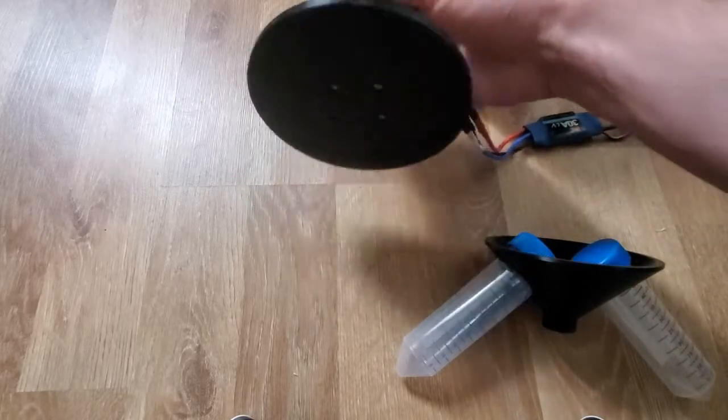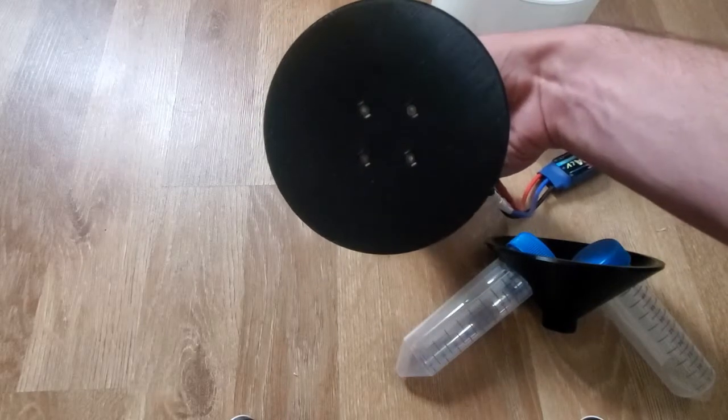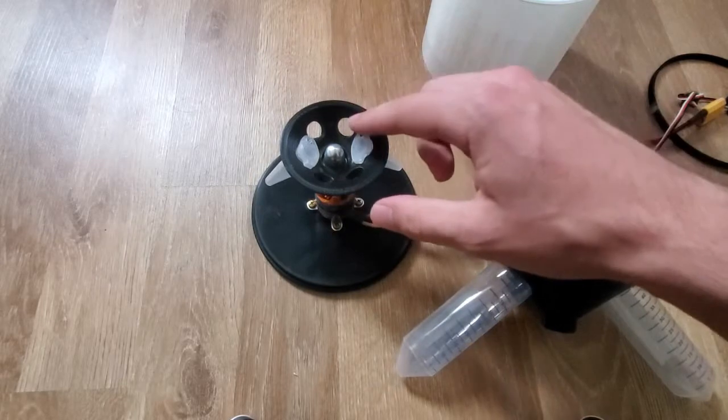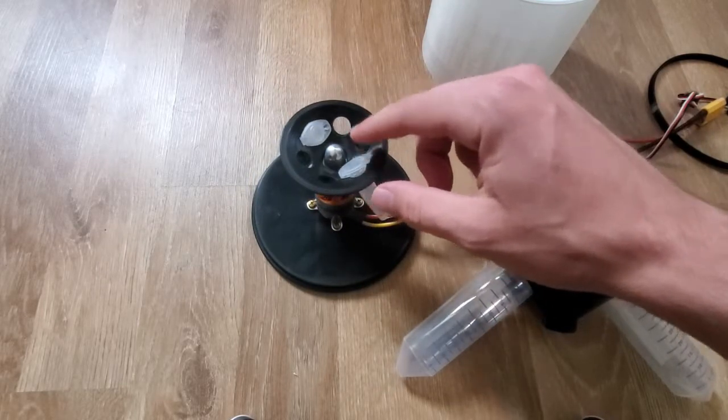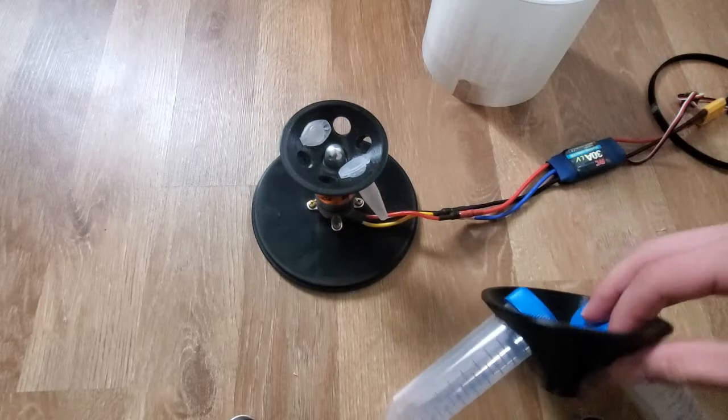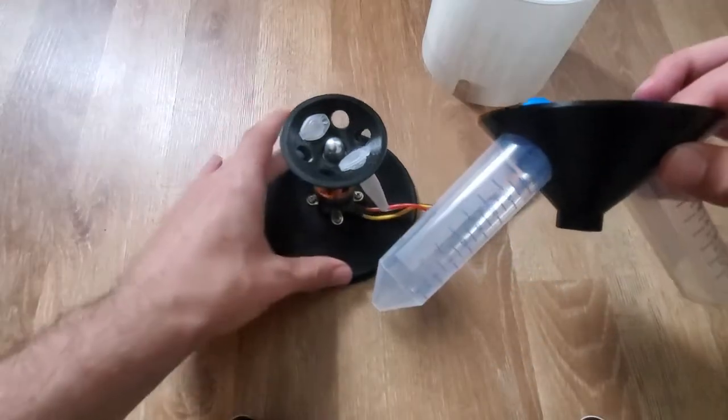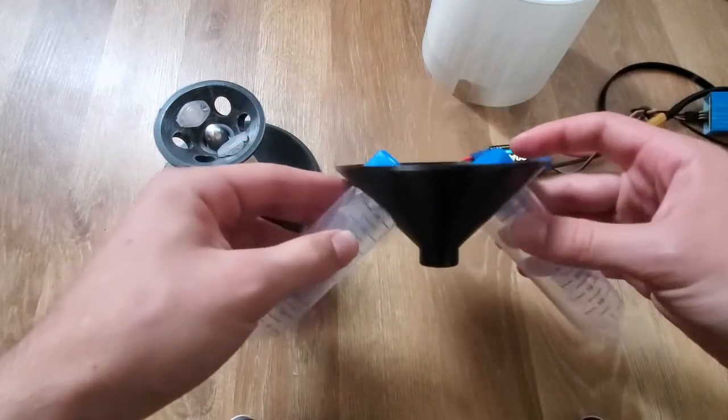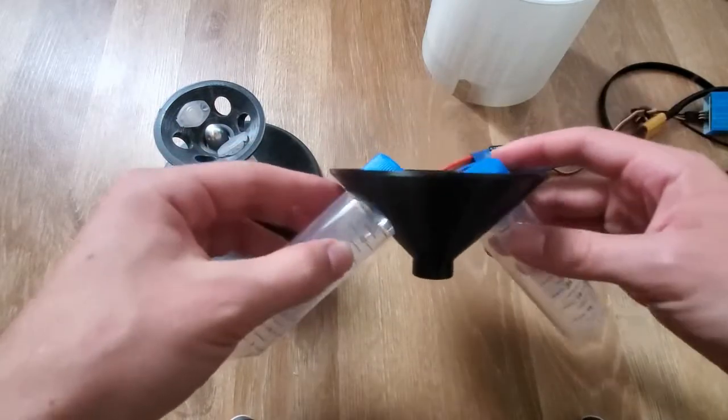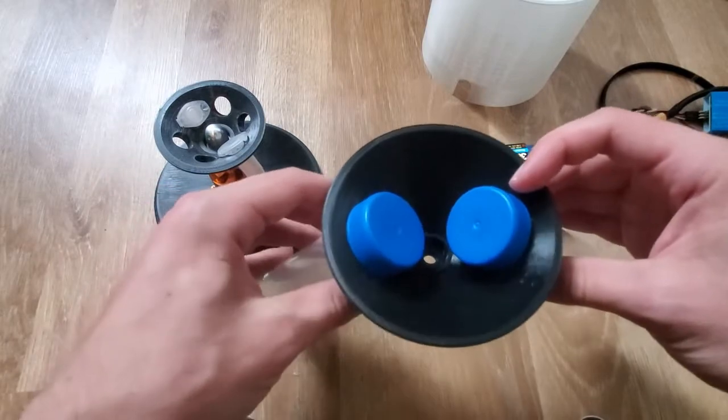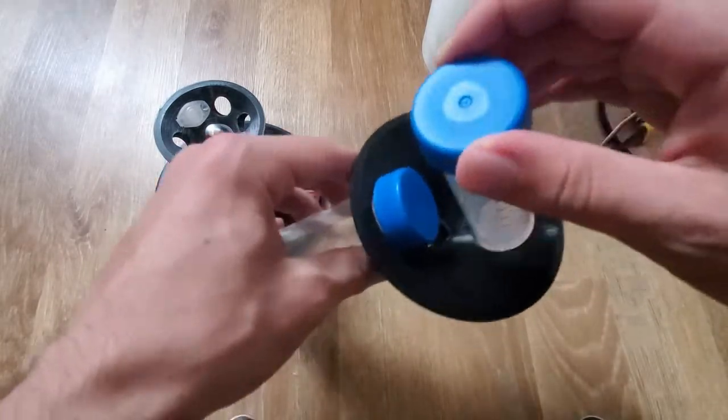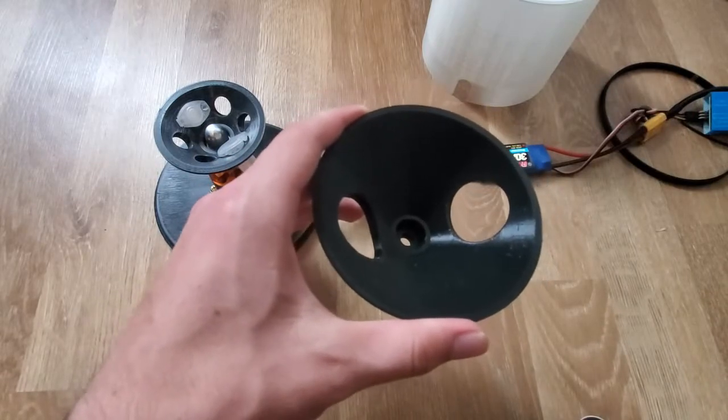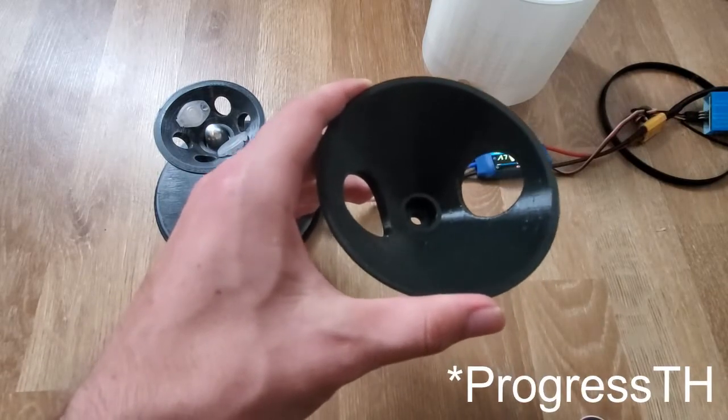The rotor holds the Eppendorf tubes. You can see here, this is a scaled-up version for 50ml tubes. Obviously I don't really want to run this one with plastic, but just so you can see what it looks like. These are actually from TH Progress on Thingiverse.